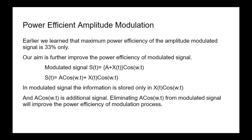We have now completed modulation — generation of amplitude modulation and demodulation. Now let's look at power-efficient amplitude modulation. We learned earlier that the maximum power efficiency of the amplitude modulated signal is only 33 percent, and our aim is to further improve the power efficiency of the modulated signal.